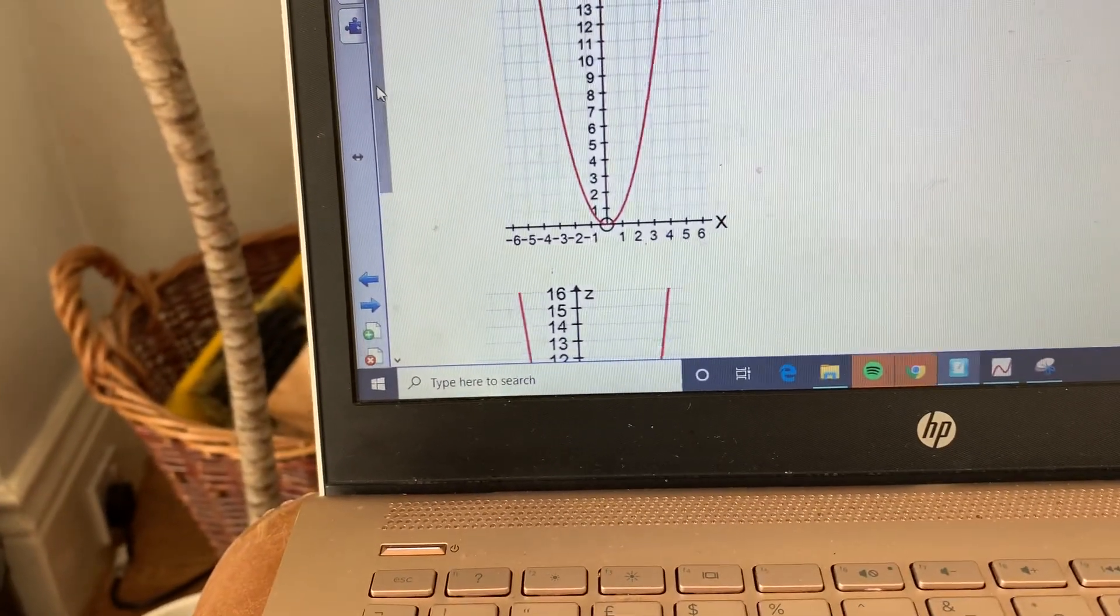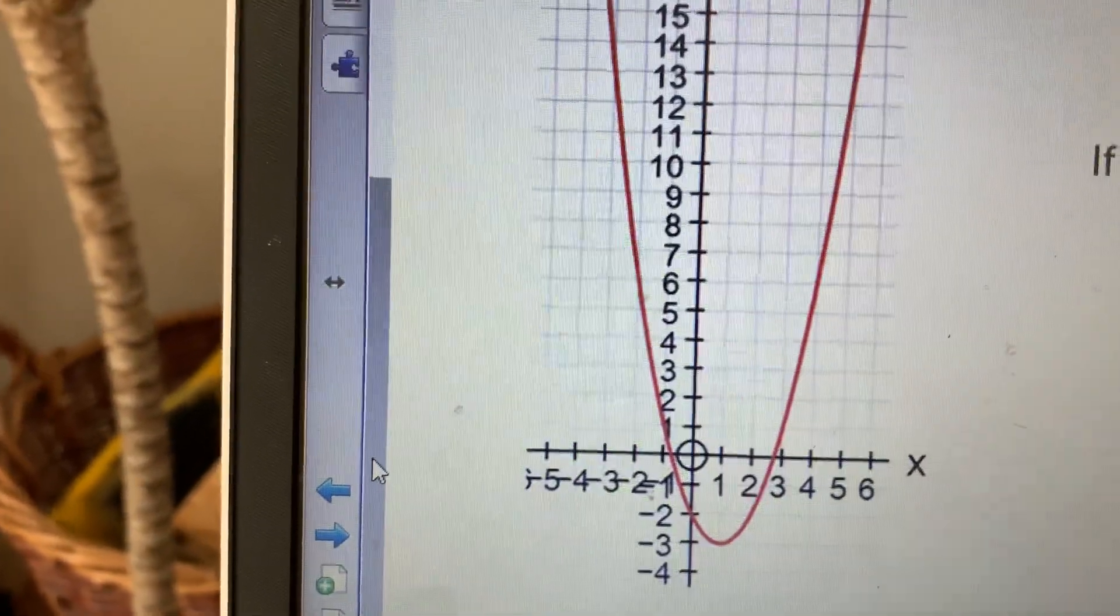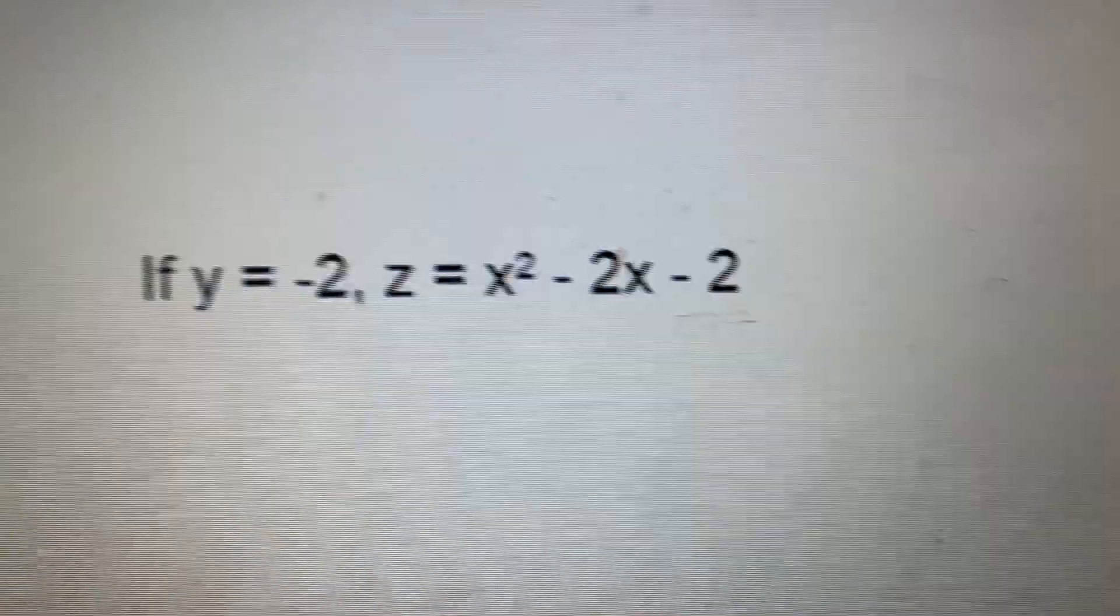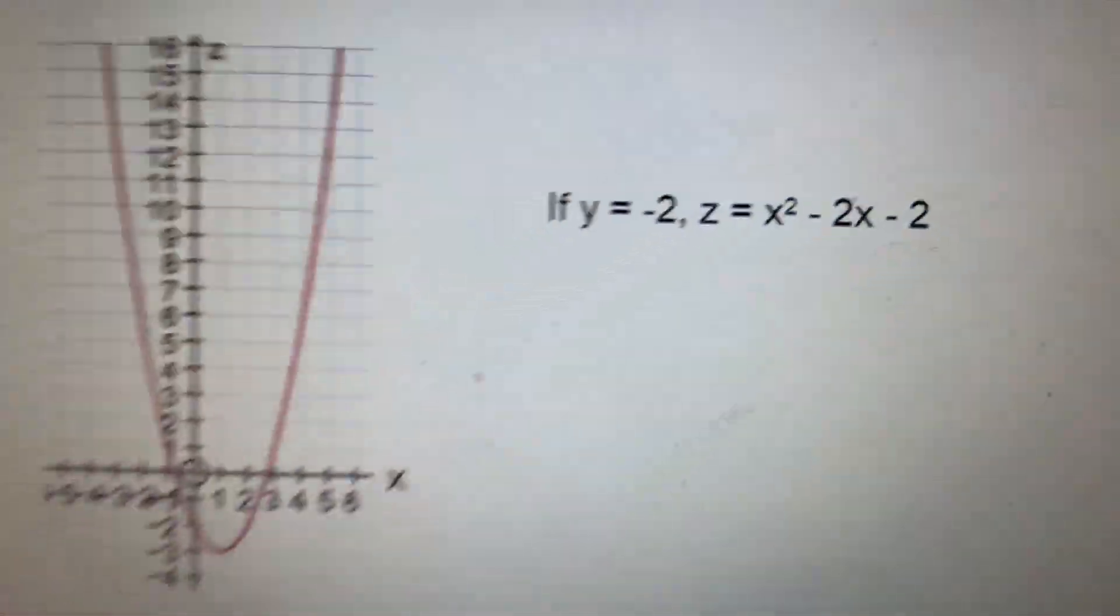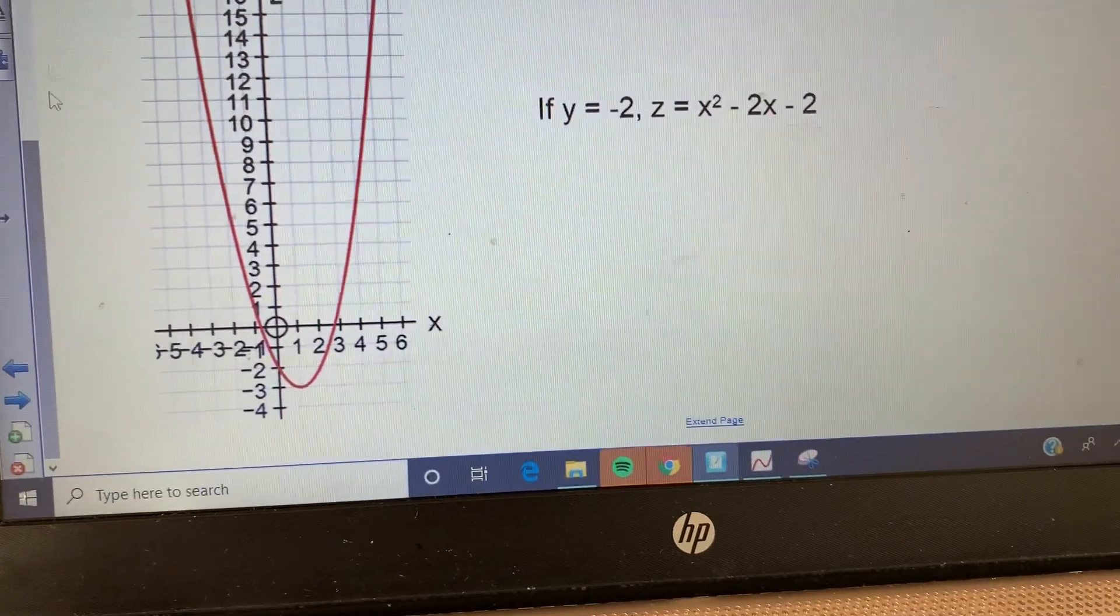And then your next one, again, it crosses the X axis there. So that's the plane Z equals 0. So it's that one. So it's not the one where Y equals 2.